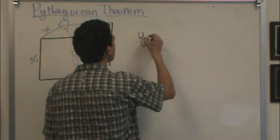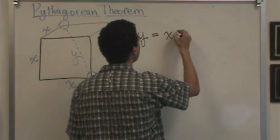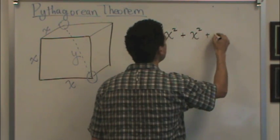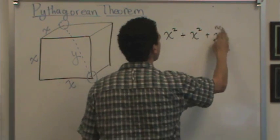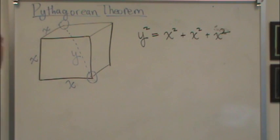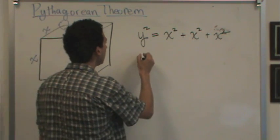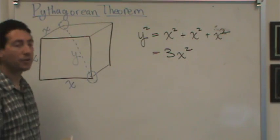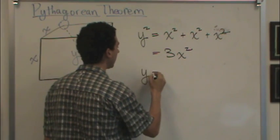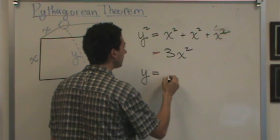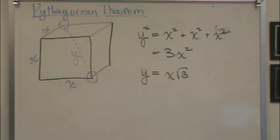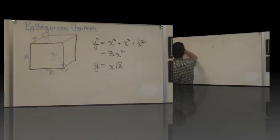Then I can use Pythagorean's Theorem to solve for y. y in three dimensions is just the sum of the squares of each of the sides of the cube: x squared plus x squared plus x squared. So y squared is 3x squared, and therefore y equals x root 3. This is Pythagorean's Theorem in three dimensions.